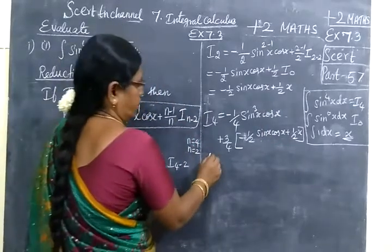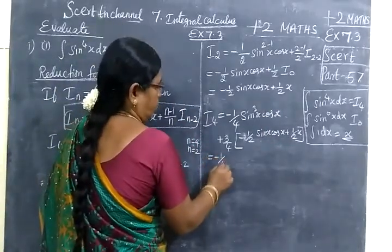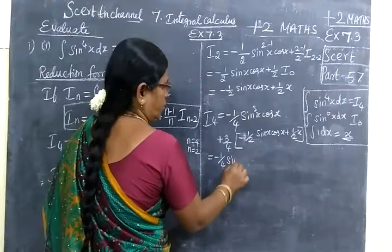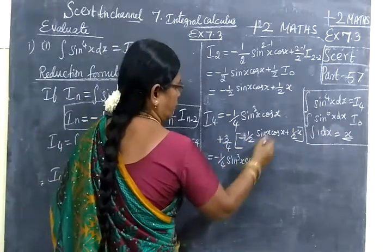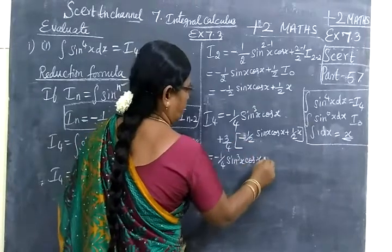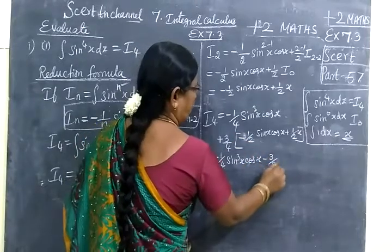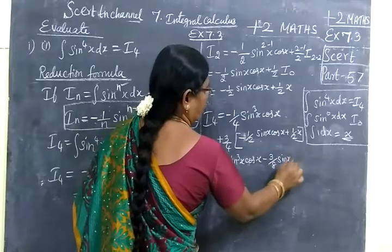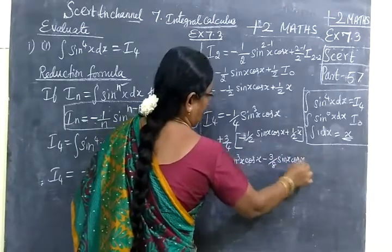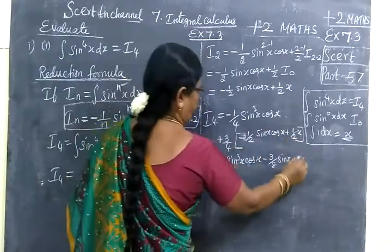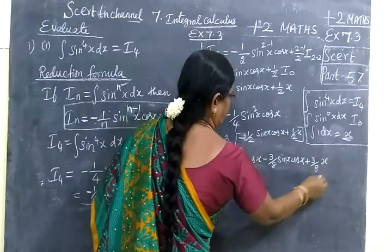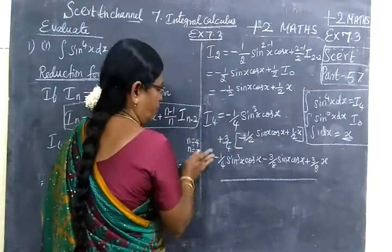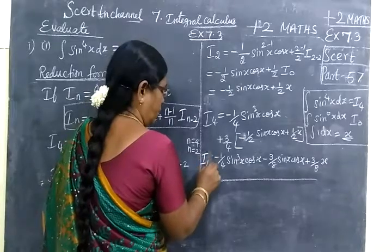So take 3 by 4 inside. Equal to minus 1 by 4 sin³x cos x. Take 3 by 4 inside, we will have minus 3 by 8 sin x cos x. Again take 3 by 4 times 1 by 2, so plus 3 by 8 x. So this is the value of I₄.